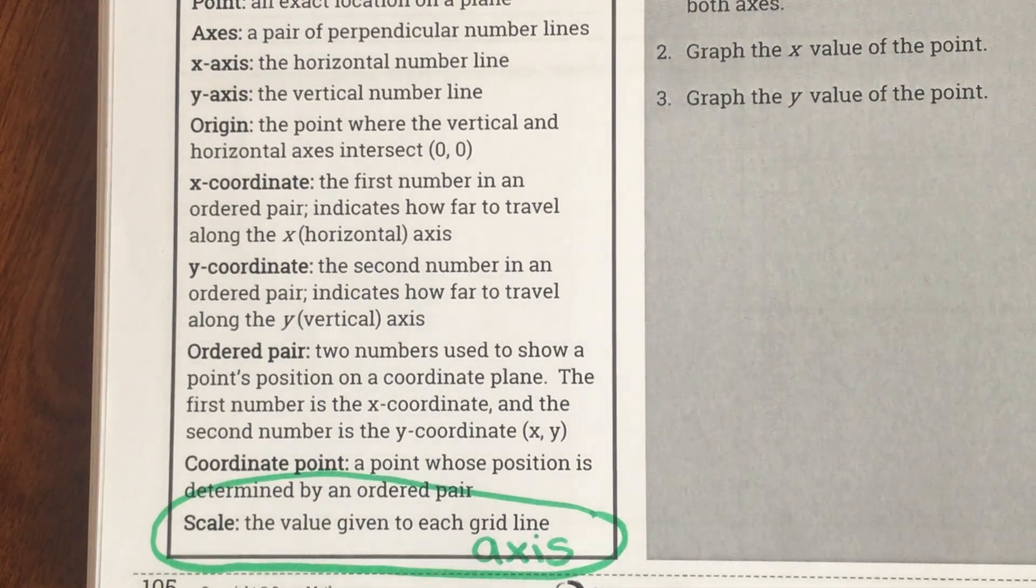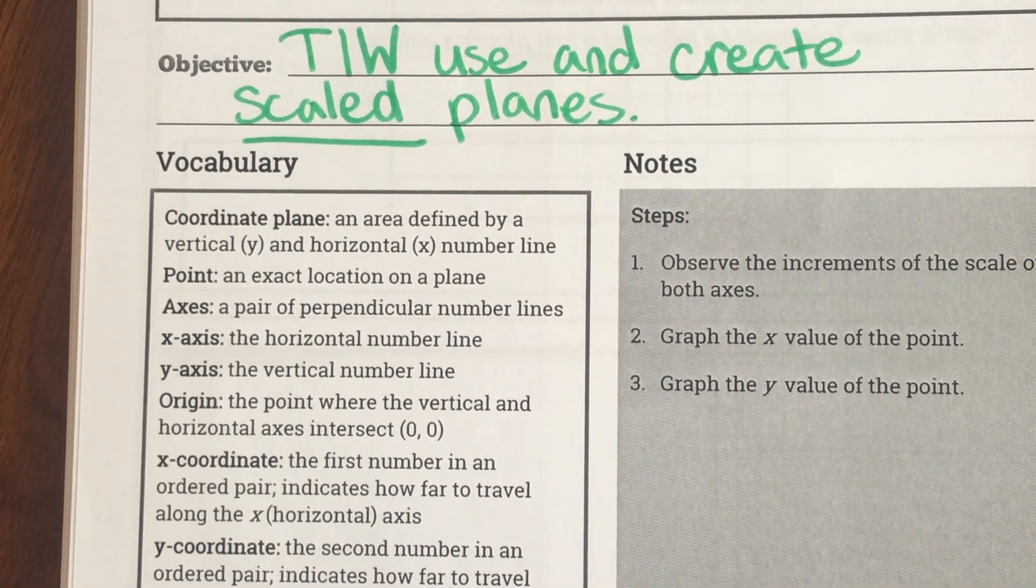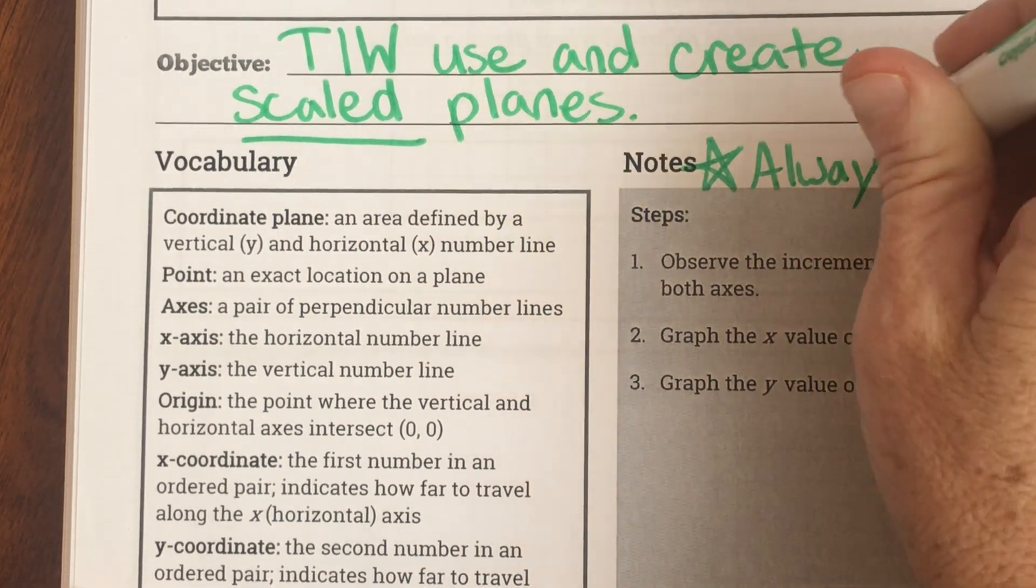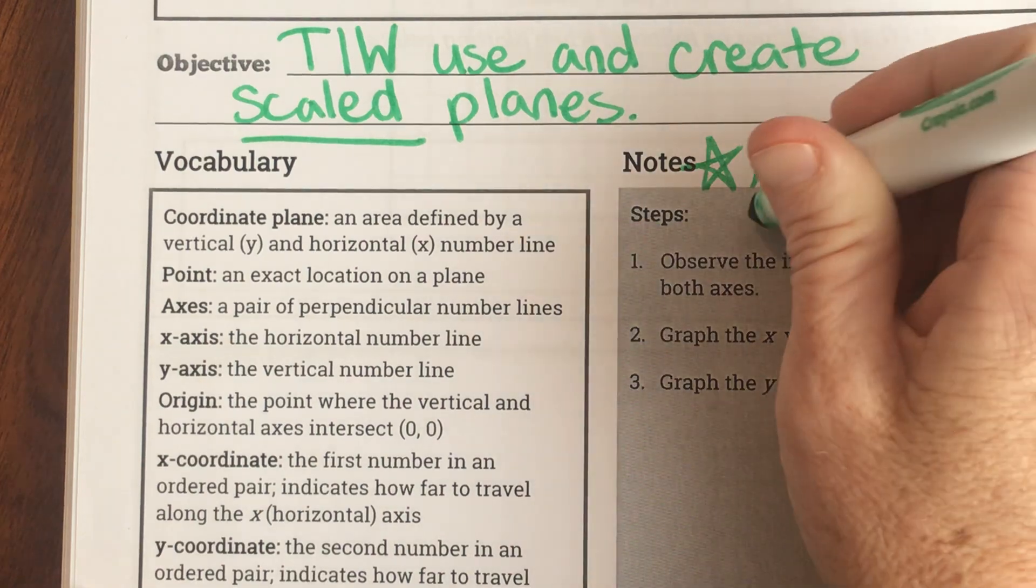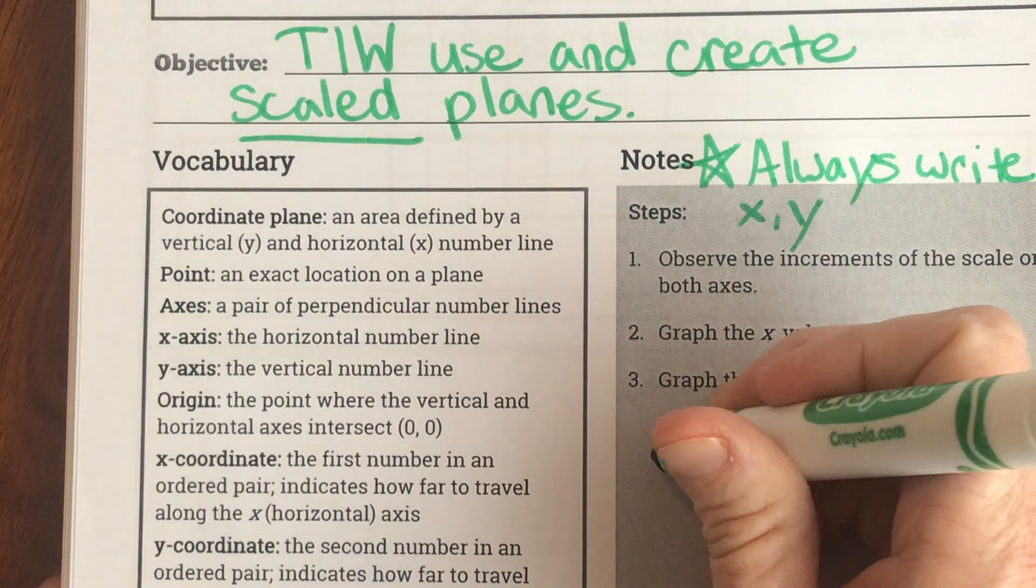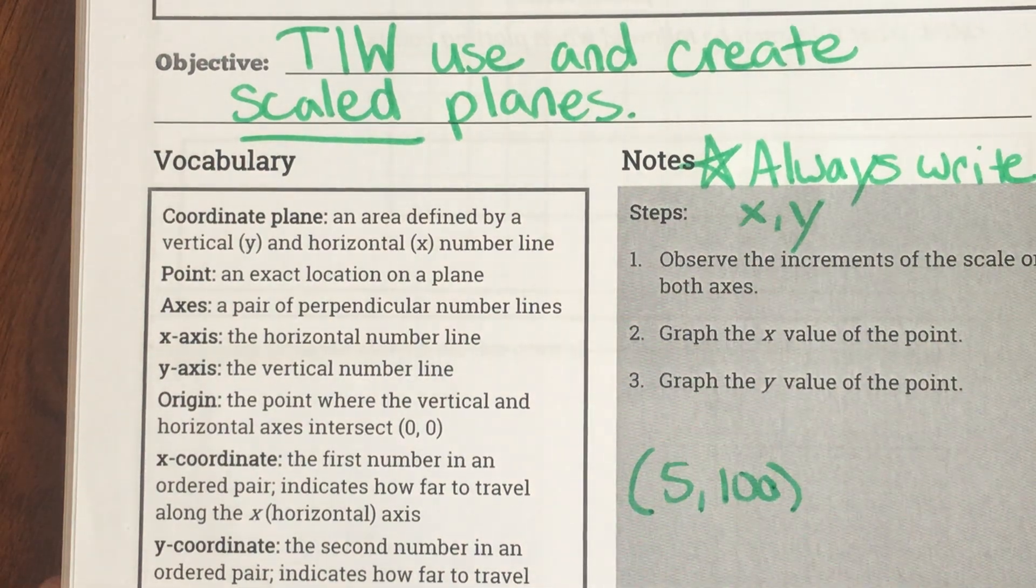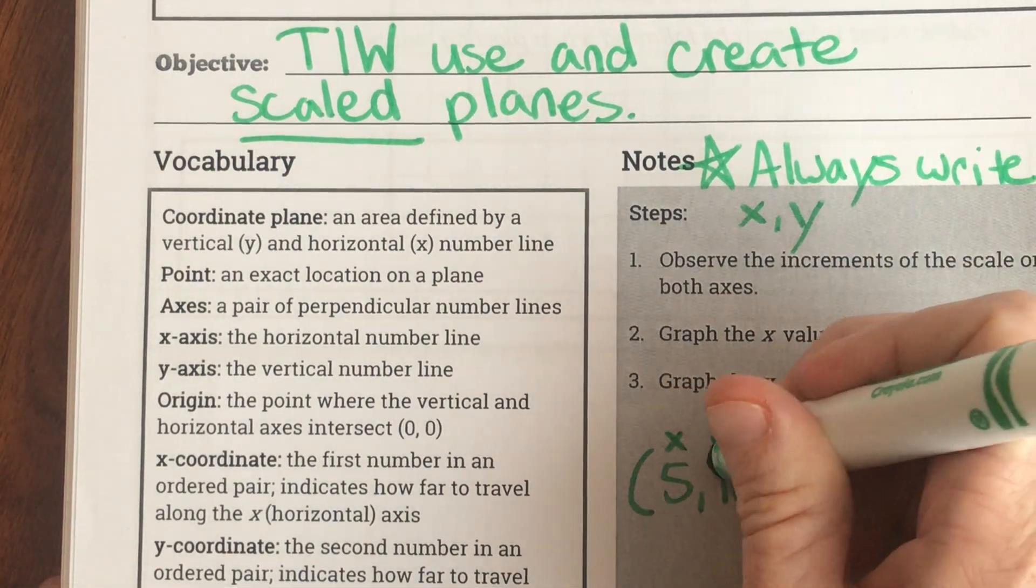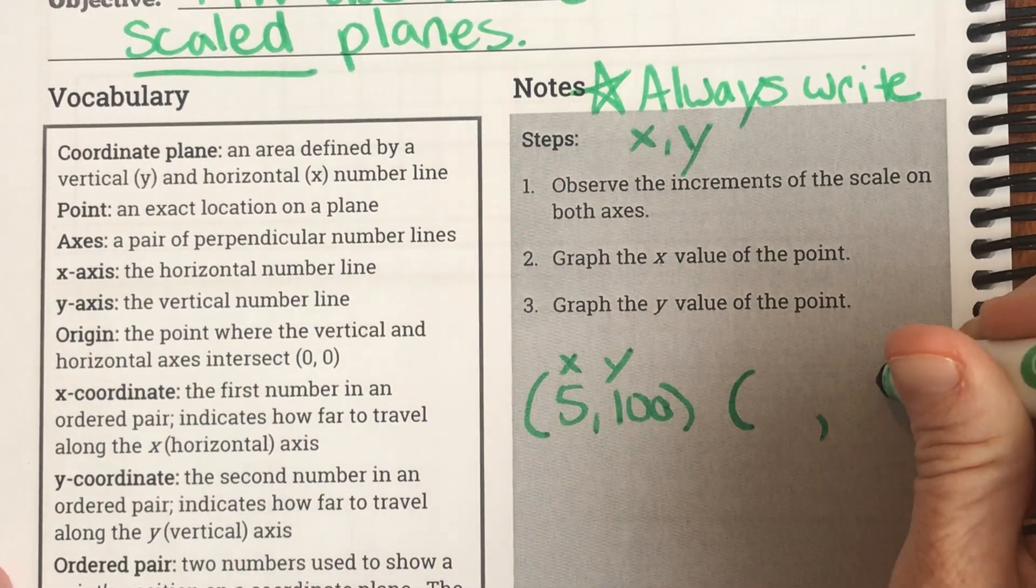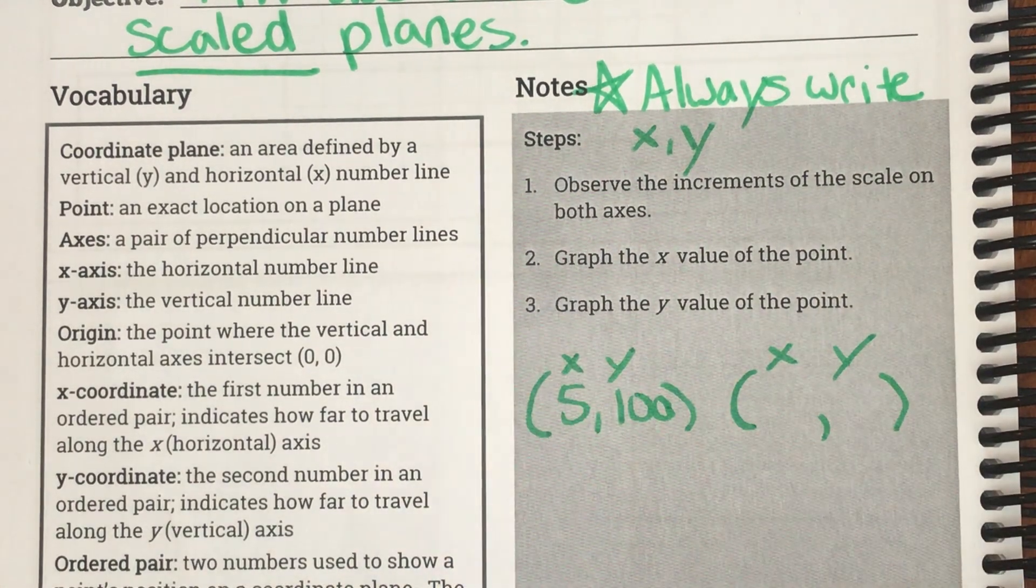Our steps are pretty similar. Remember, yesterday we added something that I said was really important: that we are going to always write x, y. If I'm given 5, 100 as a coordinate point, I'm going to say x, y. If I'm looking for a coordinate point, I'm going to set mine up ready for it, and then I'm going to put an x, y on top and then fill in the blanks.